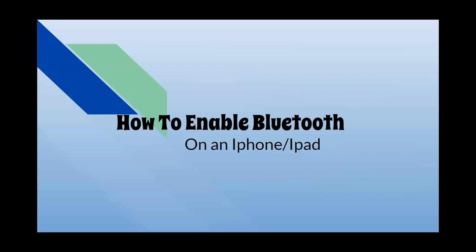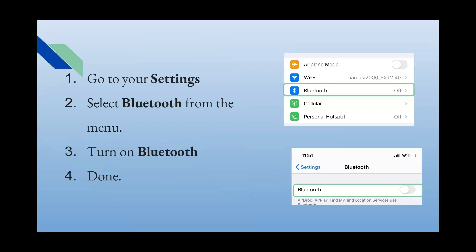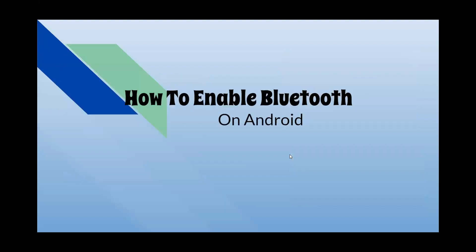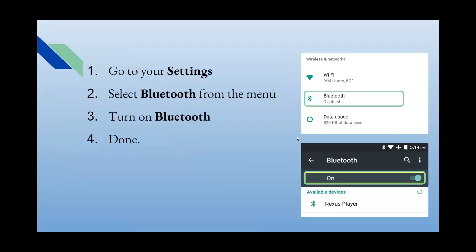So how do you enable Bluetooth on your iPad or iPhone? First, go to Settings — it will appear like this — then select Bluetooth from the menu and simply click the toggle button to turn it on. For Android, it's the same process: go to Settings, select Bluetooth, and turn it on by pressing the toggle switch.